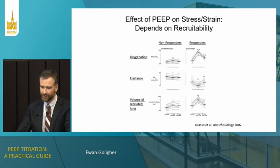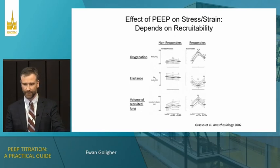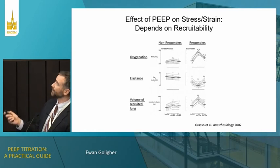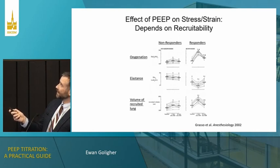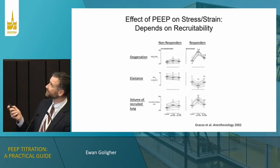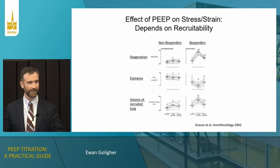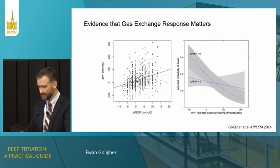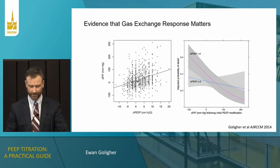For a long time we've known about this variability in response to increases in airway pressure. This is an older study from Grasso and colleagues where they applied a lung recruitment maneuver to a series of ARDS patients and showed you could pick out responders and non-responders based on physiological response. Responders had a significant improvement in oxygenation, a significant reduction in elastance, and a measurable volume of recruited lung. If you see this kind of gas exchange and mechanical response, that's a very encouraging sign that you're reducing stress and strain and protecting lung units from potential injury.